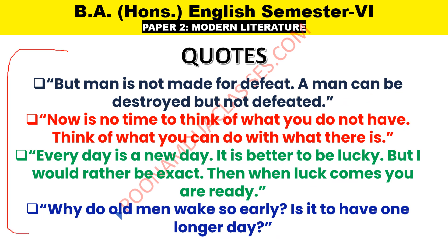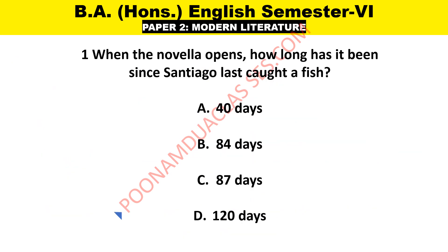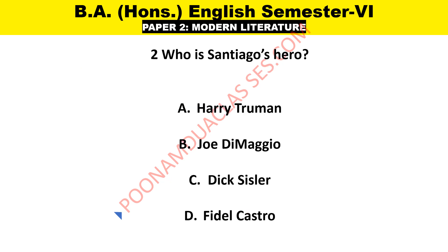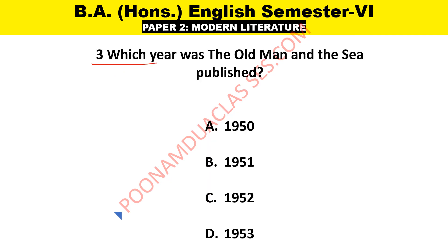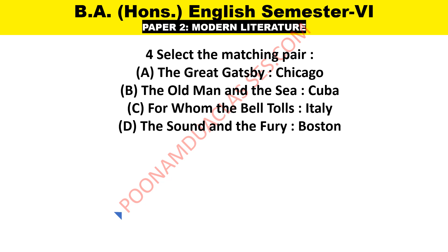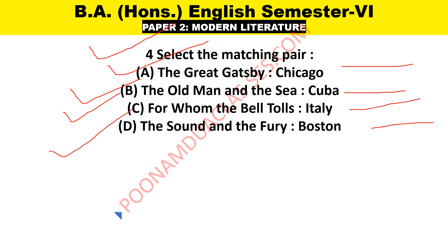All these quotes can appear in any subjective or objective exam. Now some questions for you — please answer in the comments. When the novella opens, how long has it been since Santiago last caught a fish: 40, 84, 87, or 120 days? Who is Santiago's hero: Harry Truman, Joe DiMaggio, Dick Sisler, or Fidel Castro? Which year was The Old Man and the Sea published: 1950, 51, 52, or 53? Also find the correct pair: Great Gatsby belonged to Chicago; Old Man and the Sea character belonged to Cuba; For Whom the Bell Tolls — Italy; The Sound and the Fury — Boston. Which one is correct?